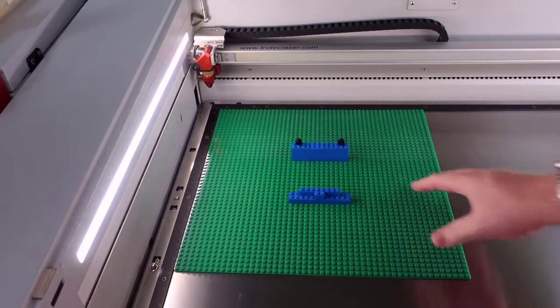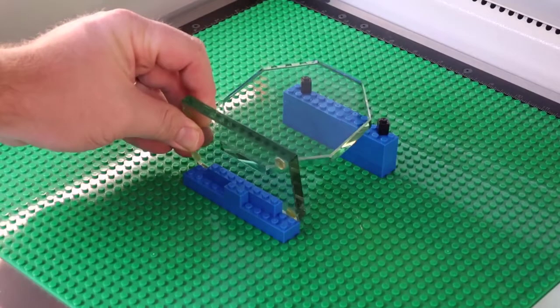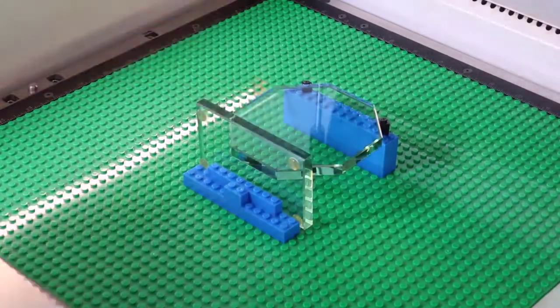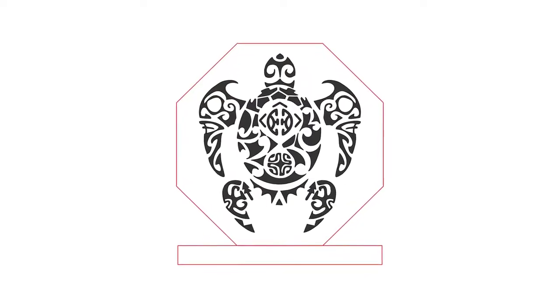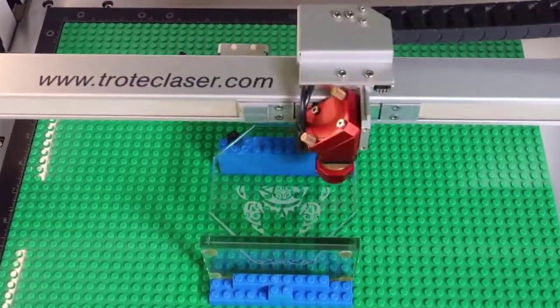Once complete, place the assembled Lego block fixture into the laser system and then use the red dot pointer to target a corner of the part for the first time to orient the file to match to this new fixture. Focus onto the material and run the laser file.